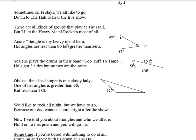Acute triangle is my heavy metal hero. His angles are all less than 90, but greater than zero. Scalene plays the drums in their band, Too Tough to Tame. He's got three sides, but no two are the same.